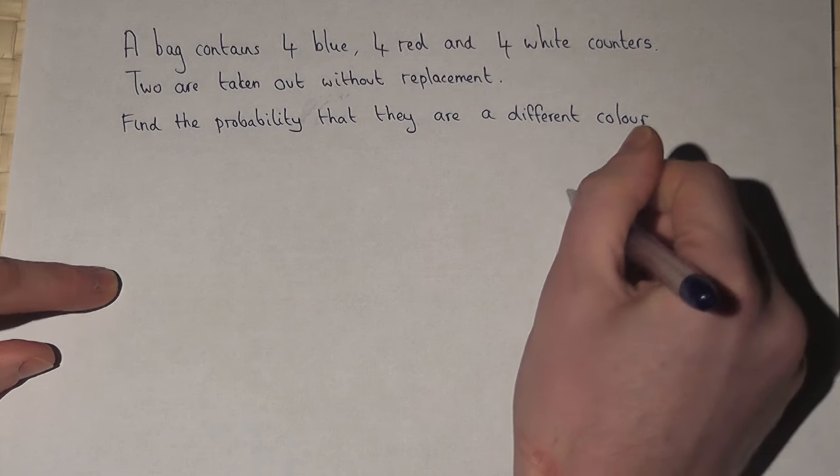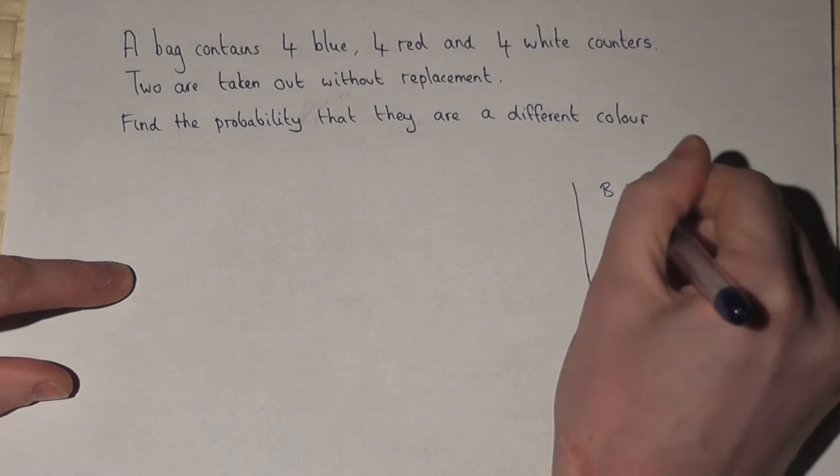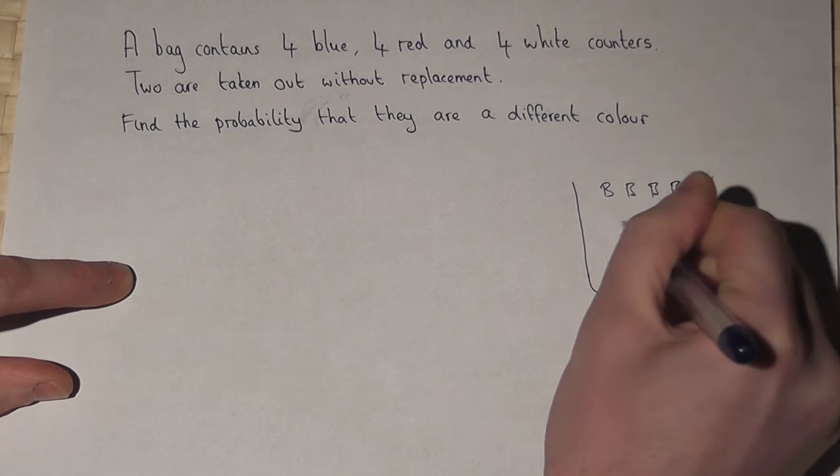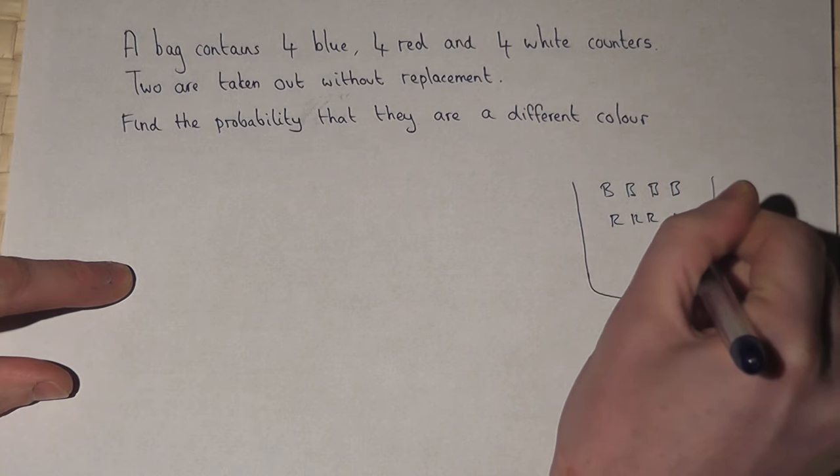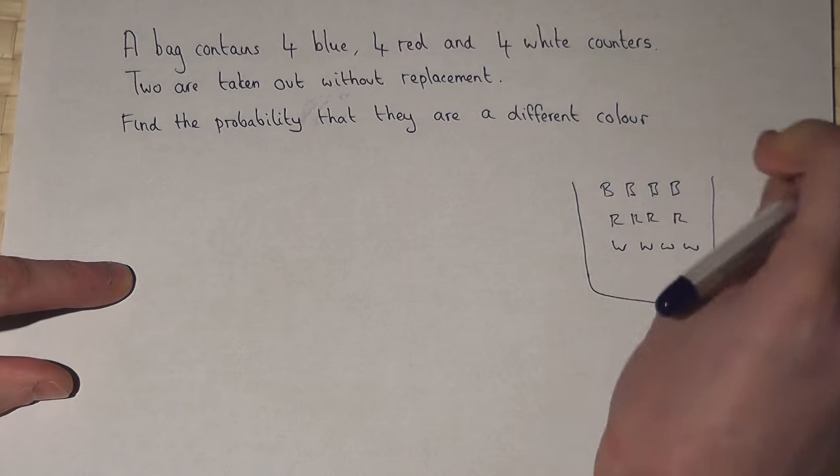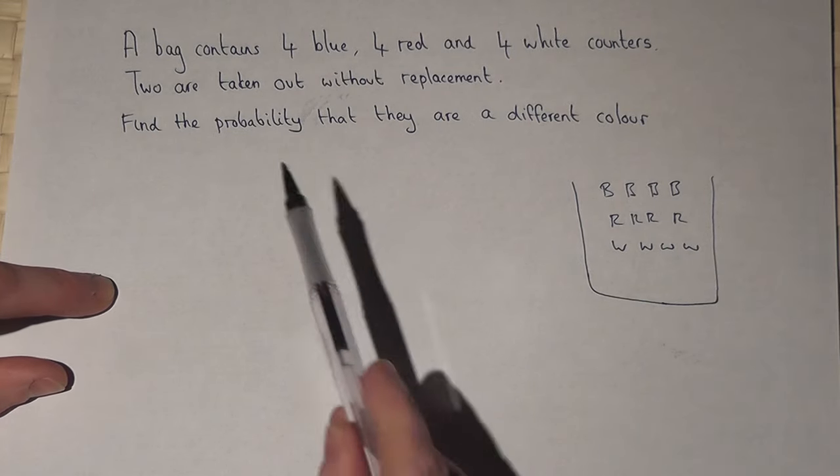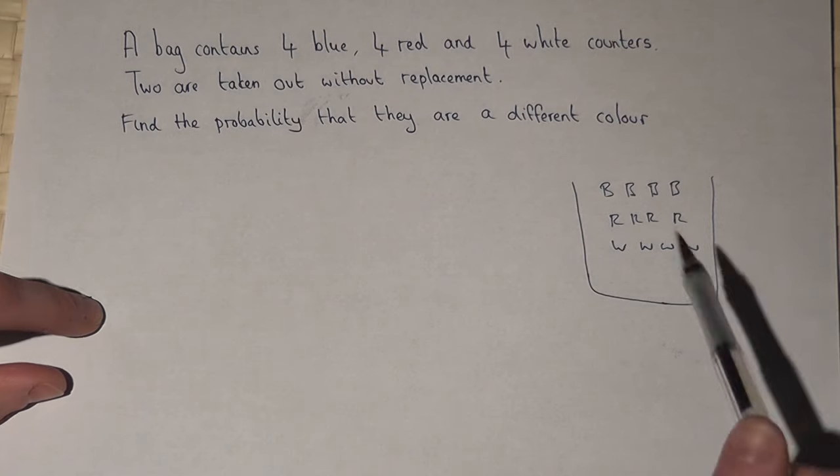In this question we have a bag and in the bag we have four blue, four red and four white counters. Two are taken out and the question is what's the chance that they are both a different colour?